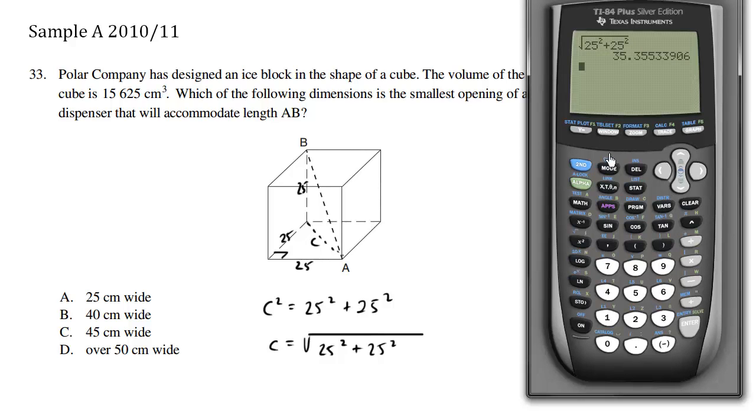Using our calculator, C is approximately equal to 35.3553.